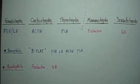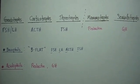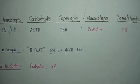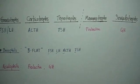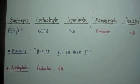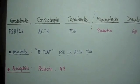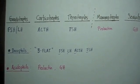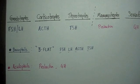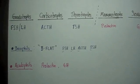The ones in blue are basophilic: FSH, LH, ACTH, and TSH. The ones in pink are acidophilic: Prolactin and Growth Hormone. One way to remember the basophils is to use the mnemonic B-FLAT, which stands for FSH, LH, ACTH, and TSH. And your acidophils are Prolactin and Growth Hormone.